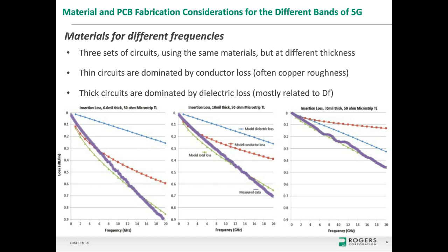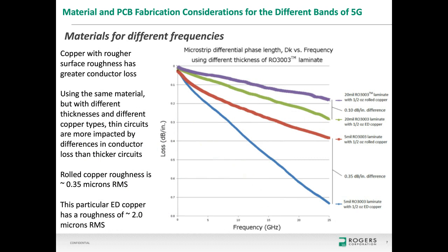Using the same RO3003 material at 5 mil and 20 mil thickness, I compared ED copper (~2.0 µm RMS roughness) versus rolled copper (~0.35 µm RMS). The difference between smooth and rough copper on the thin 5 mil circuit is about 0.35 dB/inch, while on the 20 mil thick circuit the same comparison yields only about 0.1 dB/inch difference. Thinner circuits are significantly more sensitive to copper surface roughness than thicker circuits.